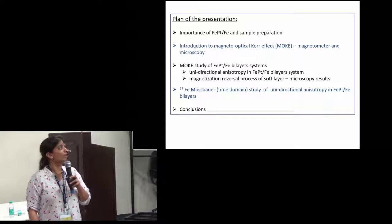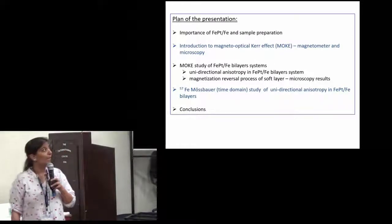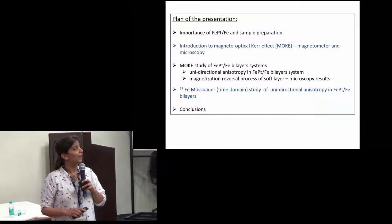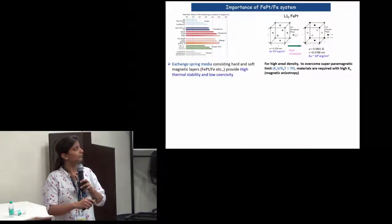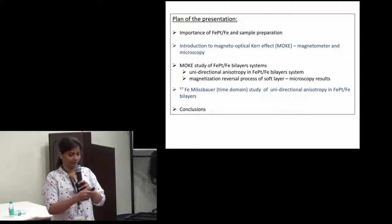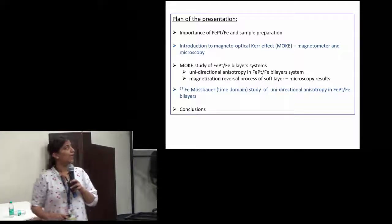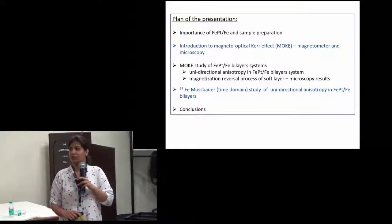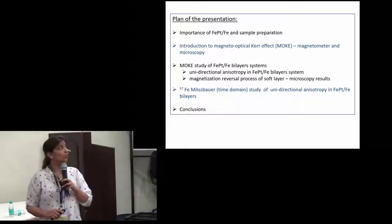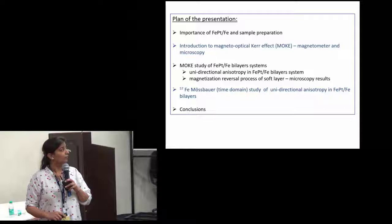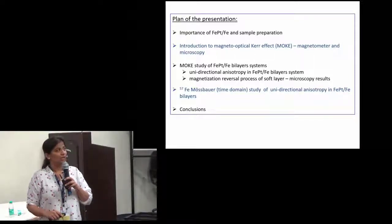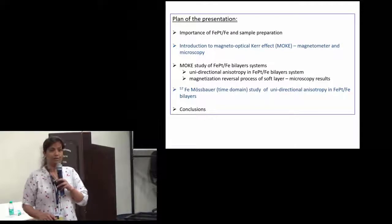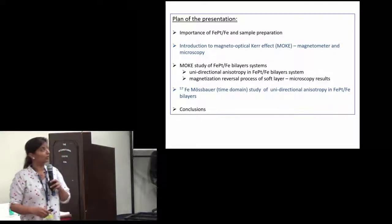First I will explain the importance of the FePt-Fe bilayer system and briefly explain the preparation. Then I will introduce the Magneto-Optical Kerr Effect, because this is extensively used in my study. Then I will explain the Mössbauer time-dependent study of the uniaxial anisotropy in the FePt-Fe bilayer system, followed by the conclusion.